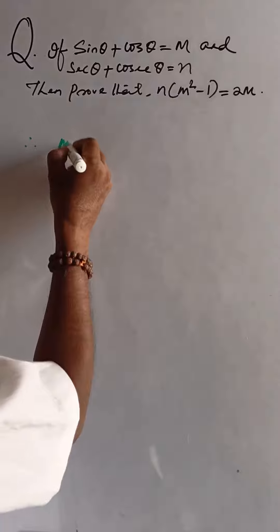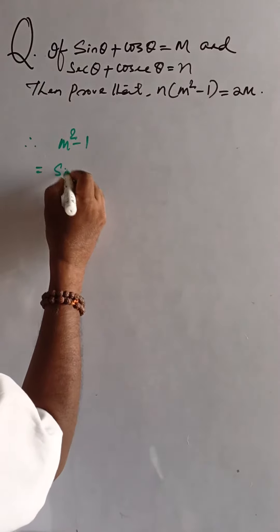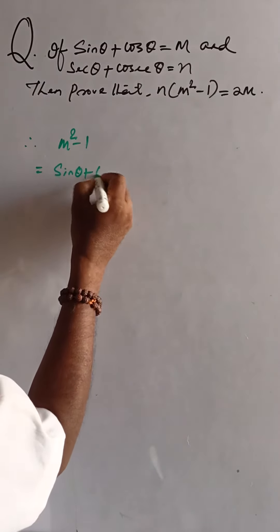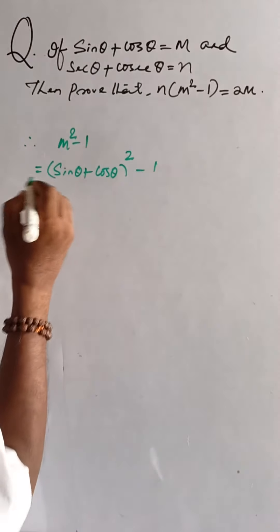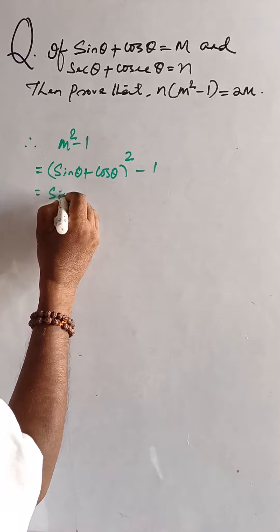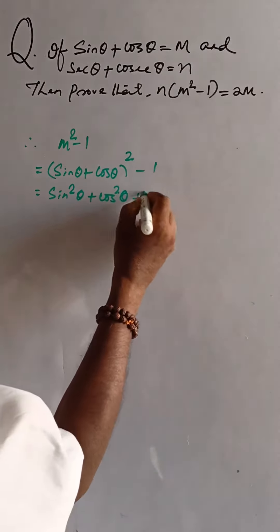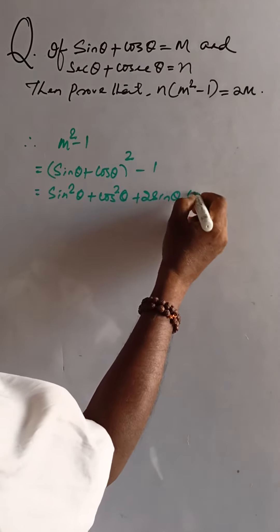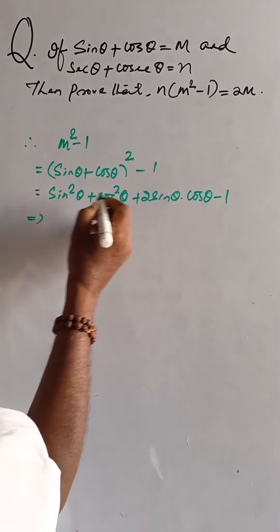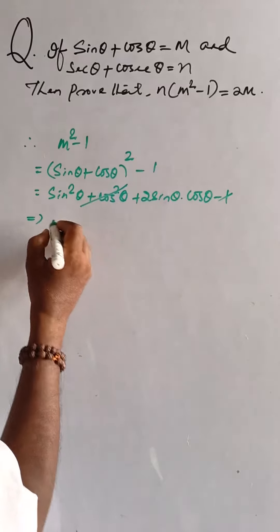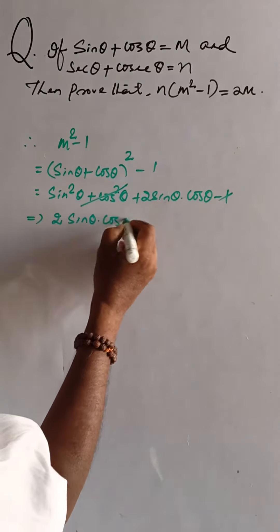Here, m² − 1 = (sin θ + cos θ)² − 1. Expanding this: sin²θ + cos²θ + 2sinθcosθ − 1. Since sin²θ + cos²θ = 1, the 1 and −1 cancel, leaving 2sinθcosθ.